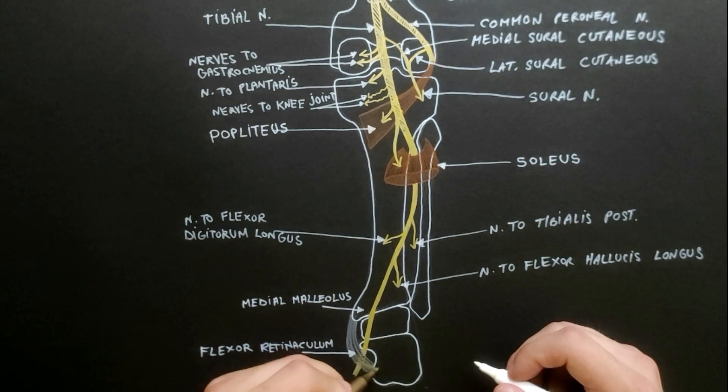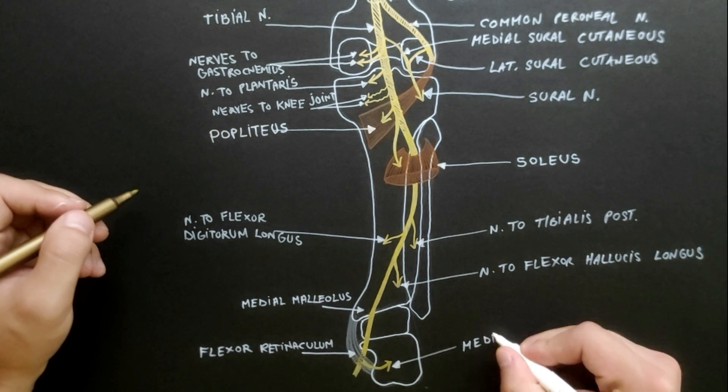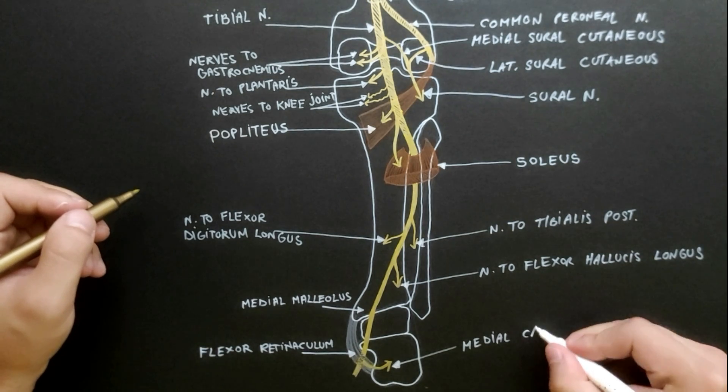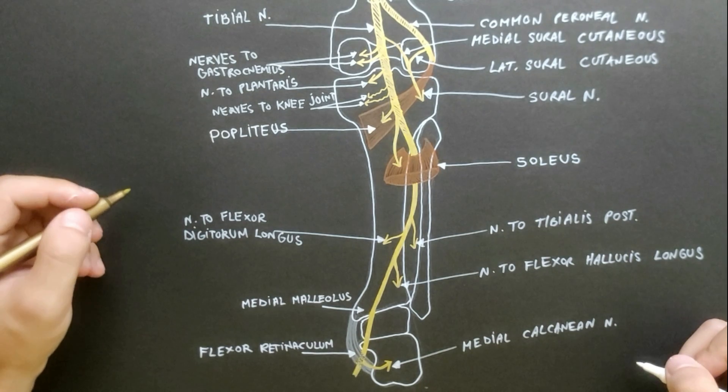While passing deep to flexor retinaculum, the tibial nerve gives the medial calcaneal nerve, which pierces the flexor retinaculum to supply the skin of the back and lower surface of the heel.